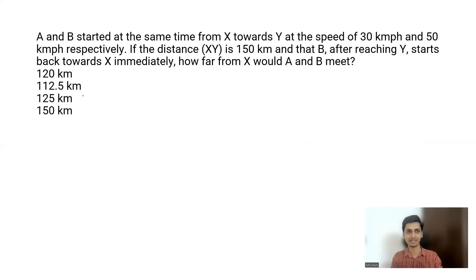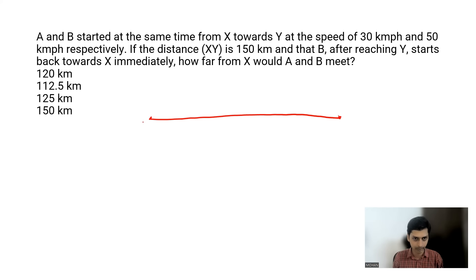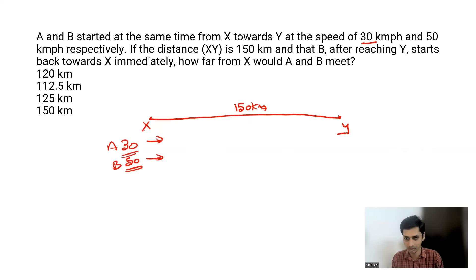Question number three: A and B start at the same time from X towards Y at speeds of 30 km/h and 50 km/h respectively. The distance XY is 150 km. After reaching Y, B starts back towards X immediately. How far from X would A and B meet? Since B's speed is 50 km/h, he reaches Y in 3 hours, covering 150 km.